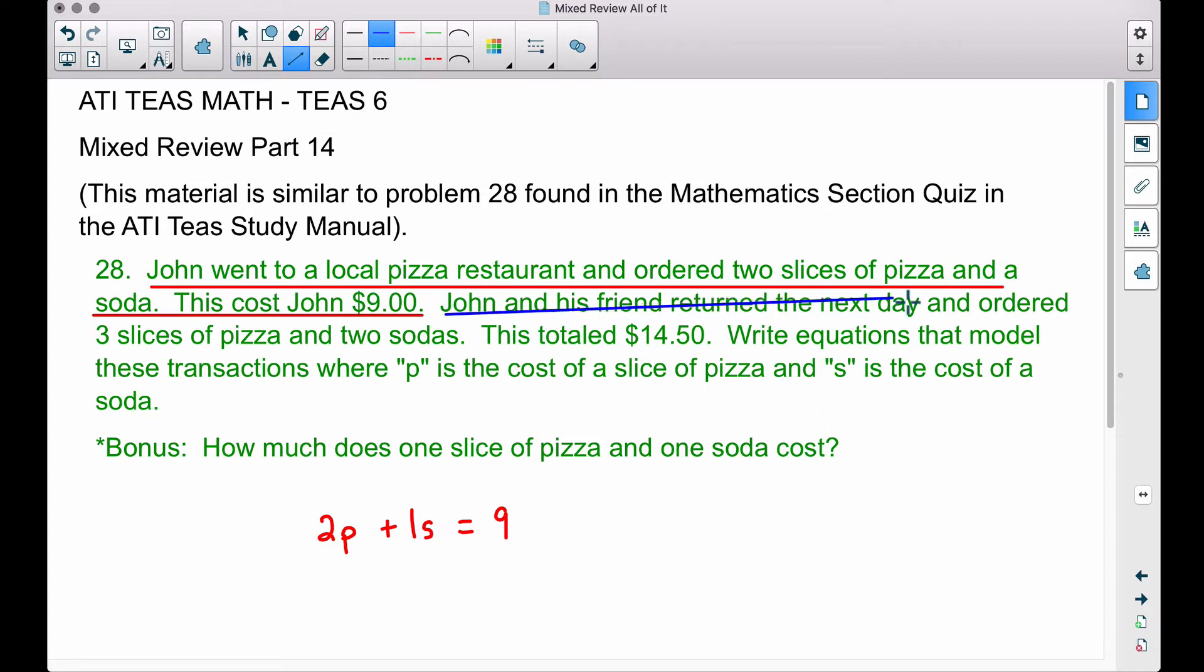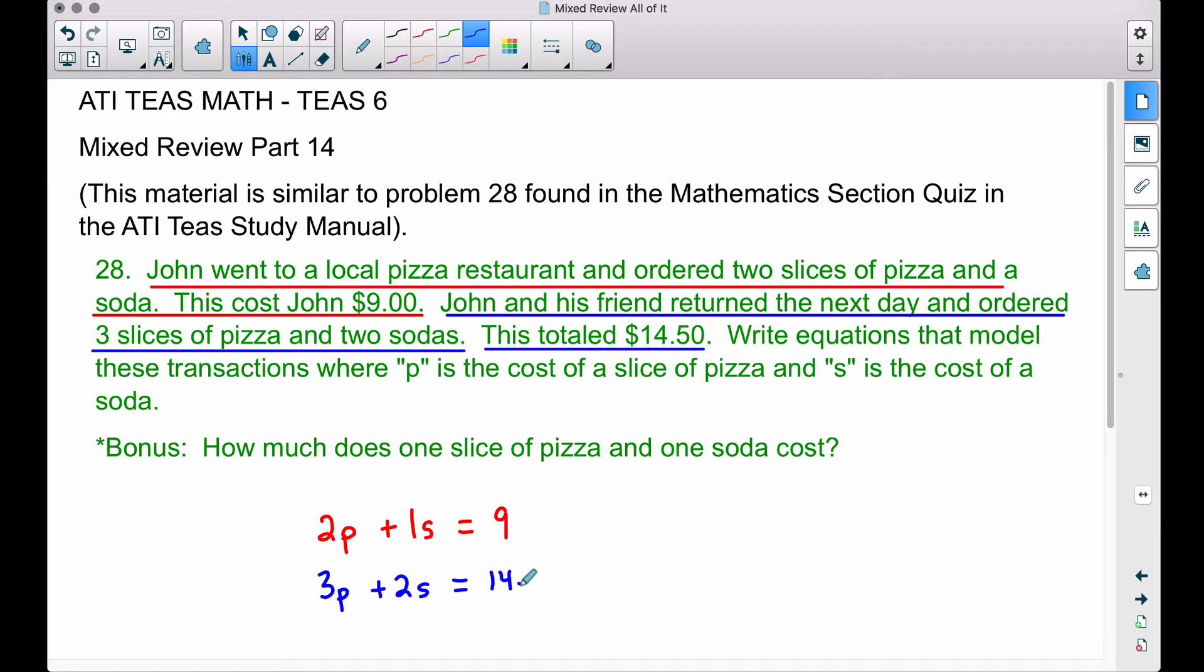Now let's look at the next piece. John and his friend returned the next day and ordered three slices of pizza and two sodas, a total of $14.50. Therefore we now have three slices of pizza, that's going to be 3P plus two sodas, and this total is $14.50. In the Mathematics Section Quiz you are forming expressions, whereas here we are dealing with equations because we are equal to something. So we are done with that first part, write equations that model these transactions.